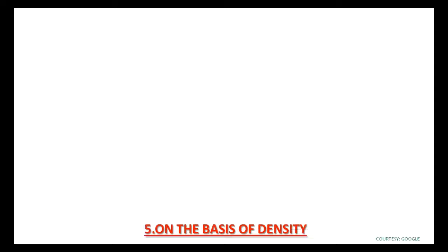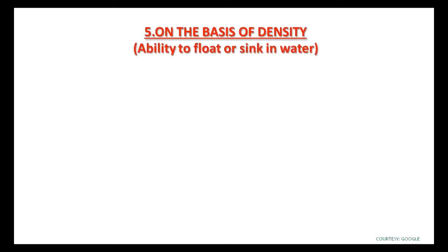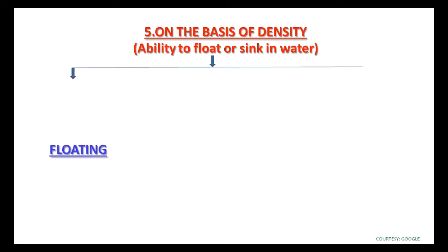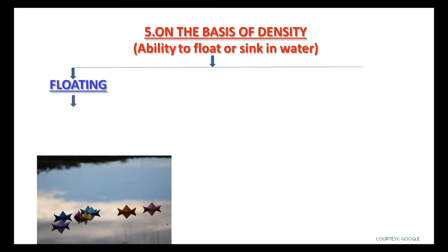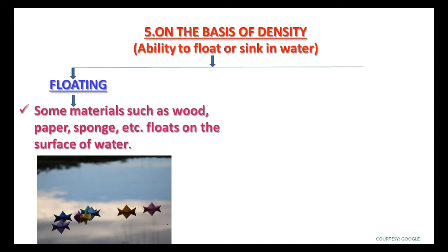The fifth property is on the basis of density. Density means the ability to float or sink in water. Materials are divided into floating materials and sinking materials. Some materials such as wood, paper, sponge, etc. float on the surface of water.